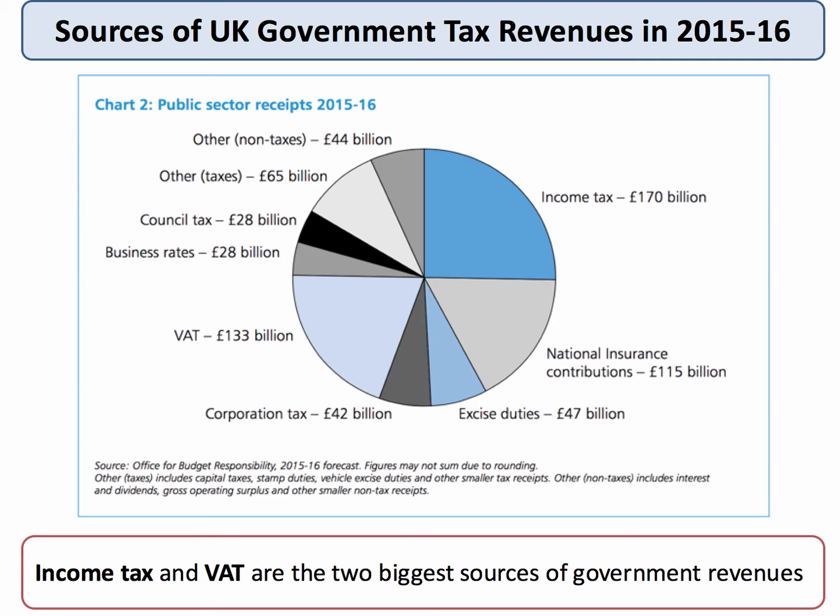Here's a chart showing the sources of tax revenue for the British government in the financial year 2015-2016. Income tax and VAT are far and away the biggest sources of government revenue — one is a direct tax, one is an indirect tax. National insurance contributions make a significant contribution, and so too do things like excise duties and corporation tax on profits, and the council tax charged by local authorities.